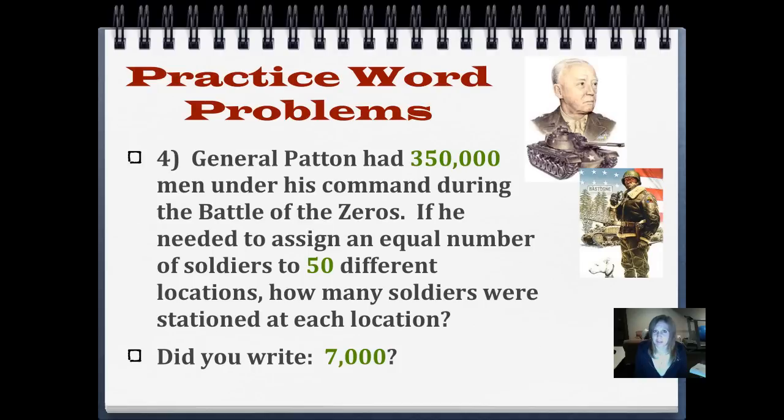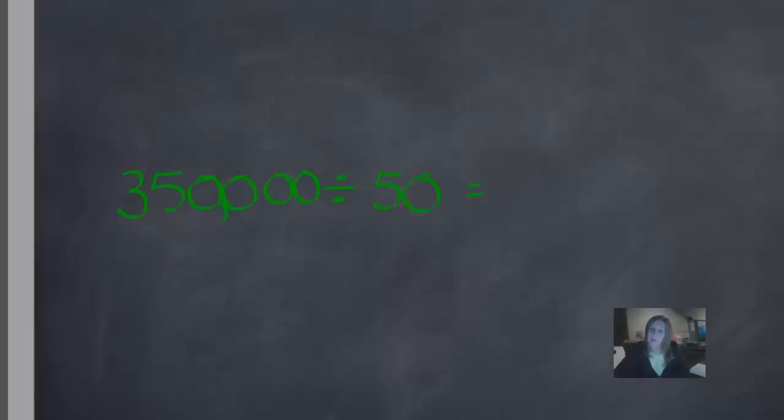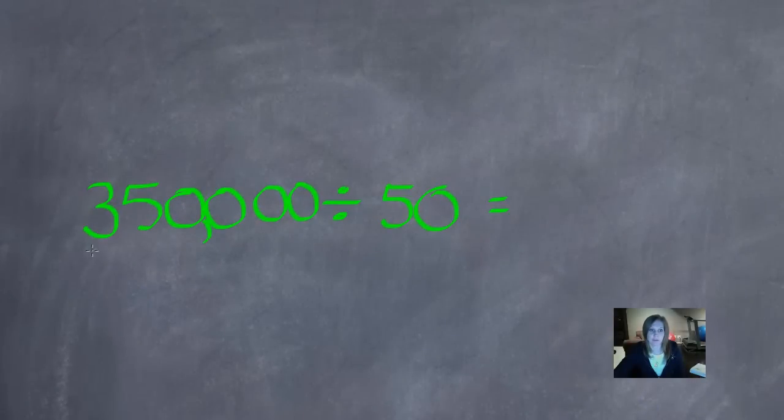Did you write 7,000? Let's see how we did that one. So 350,000 divided by 50 will underline our non-zero digits. 35 divided by 5 is 7 because 7 times 5 is 35. And then we're going to go to battle. This guy captures this guy. That's all I can cross off because I only have one zero here. So I have to count one, two, three zeros are left. And we're going to add those soldiers over here and knight them. So our answer is 7,000.